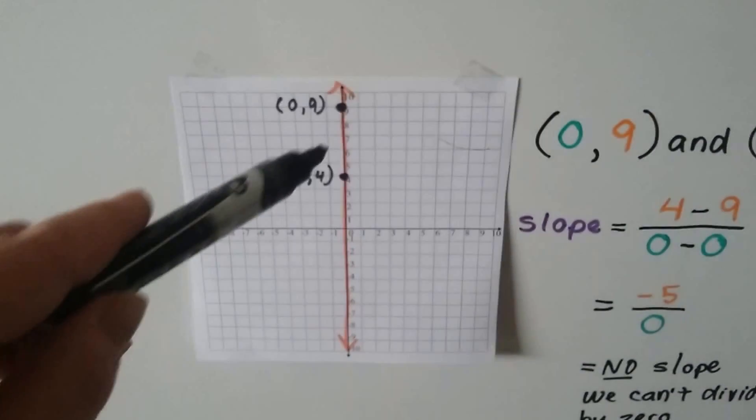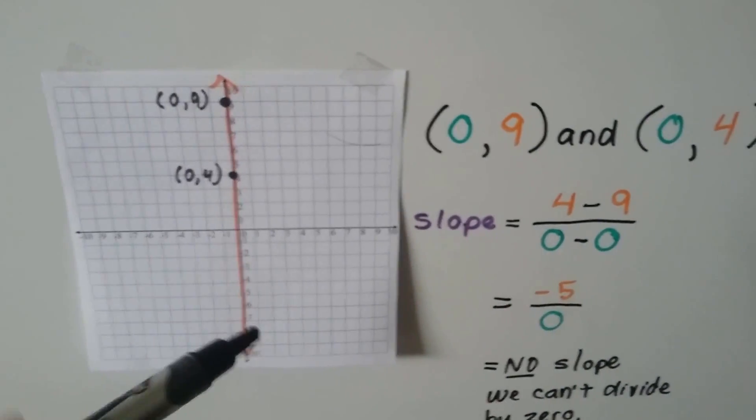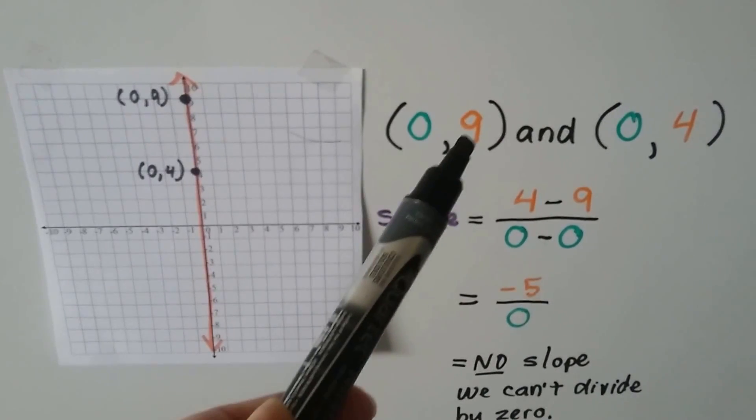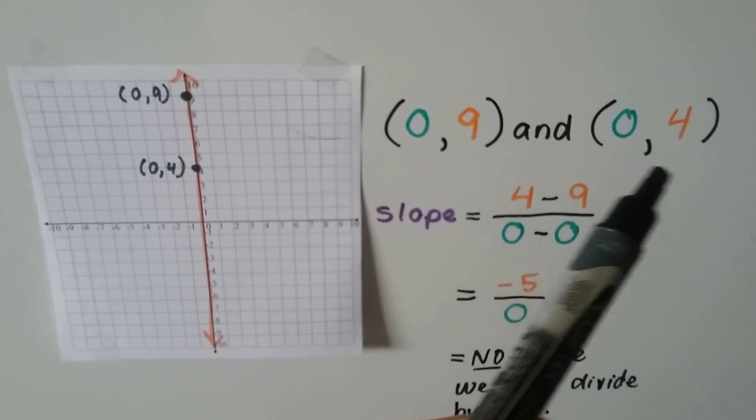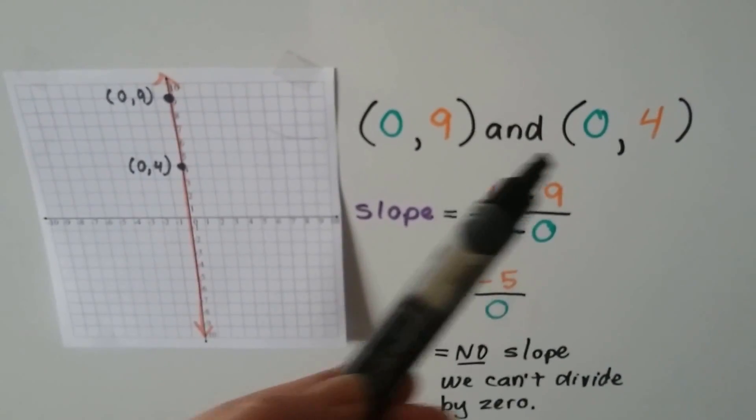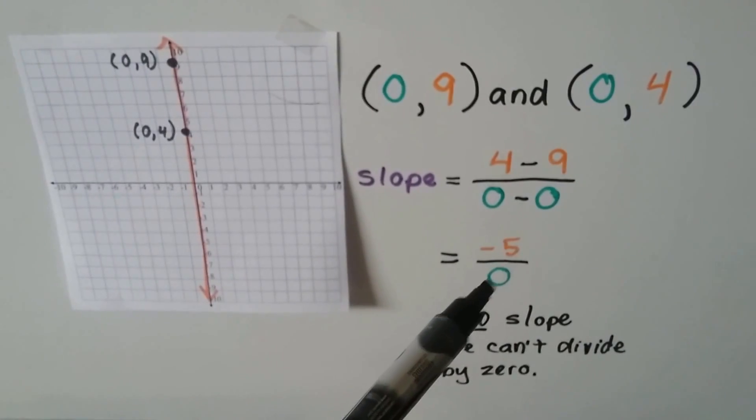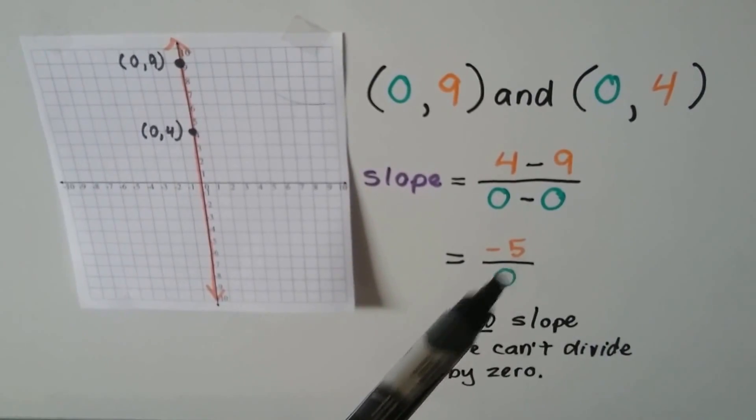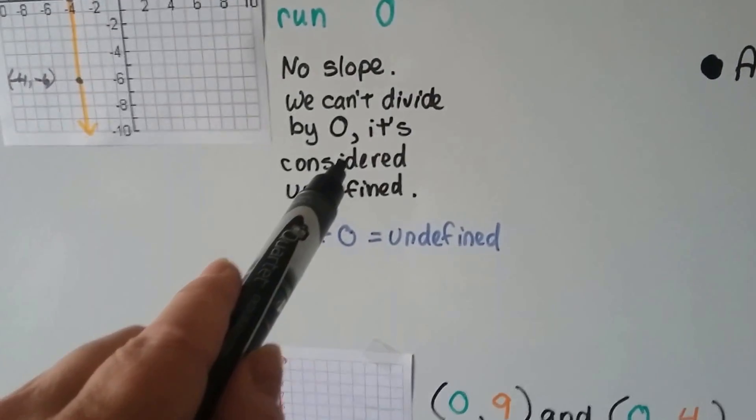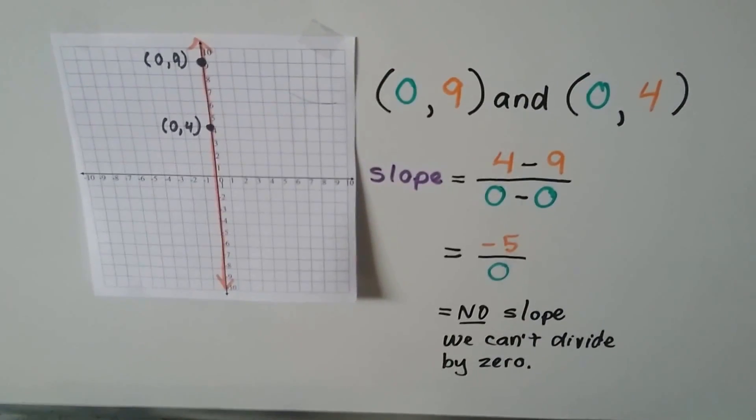This line is graphed actually on the y-axis. So we have a 0 for x and a 9 for y and a 0 for x and a 4 for y. If we do 4 take away 9, we're going to get a negative 5, aren't we? But we have a 0 for a denominator, and we can't do that. We can't have a 0 for a denominator. That's no slope. You can't divide by 0.